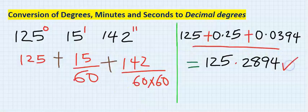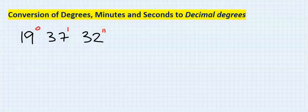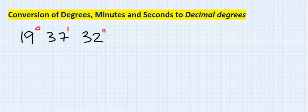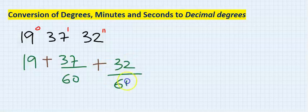Let's solve this problem: convert this DMS to decimal degrees. The first step, you leave the degrees plus the minutes you divide by 60, and the seconds which is 32 you divide by 60 times 60.